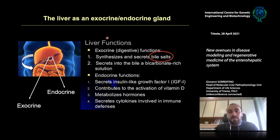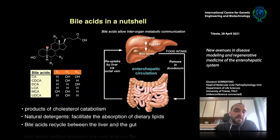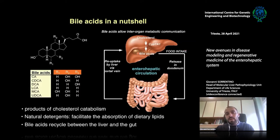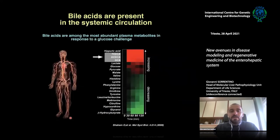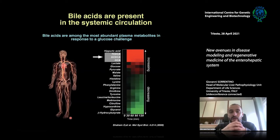In our laboratory, we got interested in the exocrine activity of the liver — specifically the synthesis and secretion of bile acids. Bile acids are metabolites derived from cholesterol, synthesized in hepatocytes, stored in the gallbladder, and after food intake are secreted directly into the intestinal lumen, where they act as natural detergents to facilitate absorption of hydrophobic lipids. Bile acids are also found at the systemic level in plasma after food intake, being among the most abundant metabolites after a glucose challenge.